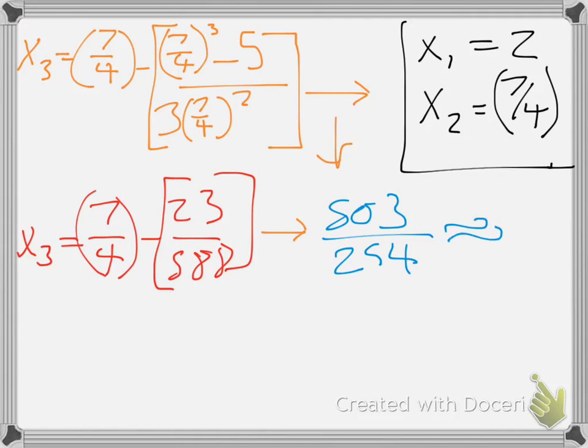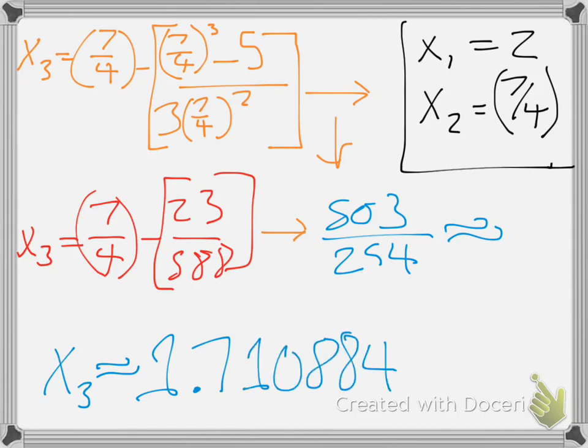which we need a decimal approximation here. So x_3 approximated as a decimal is roughly equal to 1.710884354 and it's going to continue to go on for a while. So, this is our answer.